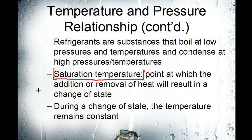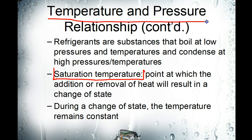Or if we add one extra degree of heat to that container, it's going to change the state of the liquid to a vapor. Saturation temperature is the point at which any heat either added or removed will result in a change of state. All of the pressure-temperature charts we look at, we're talking about the refrigerants at the saturation temperature — that is the point where heat added or removed will change it from liquid to vapor and vice versa.